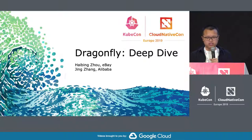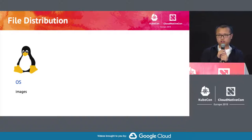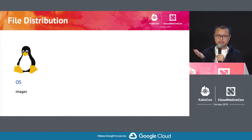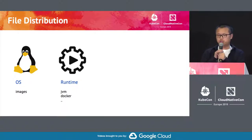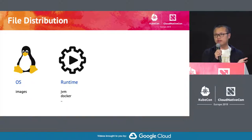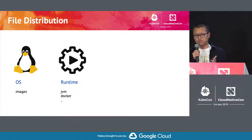Before we go into the detail, let's look at several cases where image distribution and file distribution can be a problem. Firstly, let's say you have a lot of machines. The first job you need to do is to install the operating system on all the machines, no matter if it's Linux or some different distros. Once the operating system is running, you need to install additional software to run your application. One example is JVM if you need to run Java applications. Another example is you have to run containers — you need to install one of the container runtimes, no matter if it's Docker or containerd.